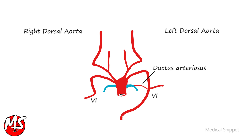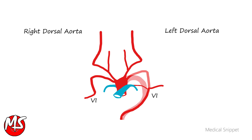After the partition of truncus arteriosus, the main pulmonary artery develops from the pulmonary trunk. As the heart shifts caudally during development, the left subclavian artery origin shifts higher, close to the origin of the left common carotid artery.